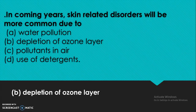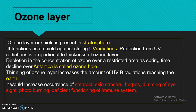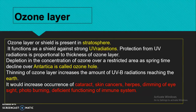In coming years, skin-related disorders will be more common due to depletion of the ozone layer. The ozone layer is a shield present in the stratosphere that protects us from ultraviolet radiation. With depletion of the ozone layer, an ozone hole gets created, allowing ultraviolet radiation to reach the earth, increasing the occurrence of cataract, skin cancers, herpes, dimming of eyesight, photo-burning, and deficient functioning of the immune system.